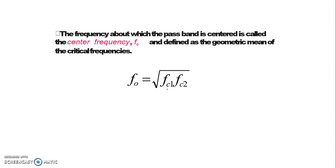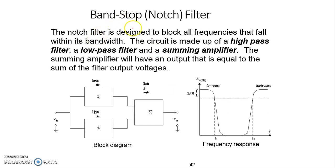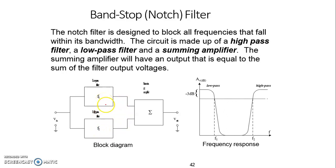Now let's move on to the band stop filter, or notch filter. A very narrow band stop filter is often referred to as a notch filter. A band stop, band reject, or notch filter can be obtained by incorporating a low pass filter and a high pass filter in parallel. You give the input common to both a low pass filter and a high pass filter, and their outputs are taken and given to a summing amplifier — an inverting summing amplifier.